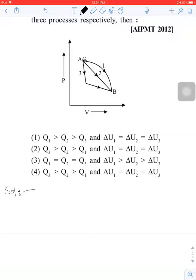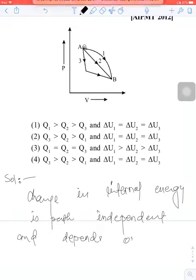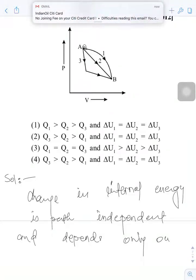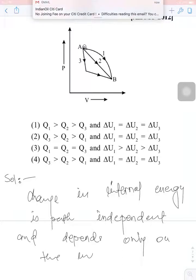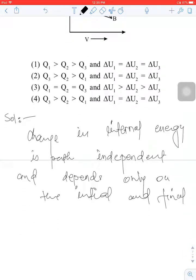First, the change in internal energy is path independent and depends only on the initial and final state. Initial and final state means the initial and final position.